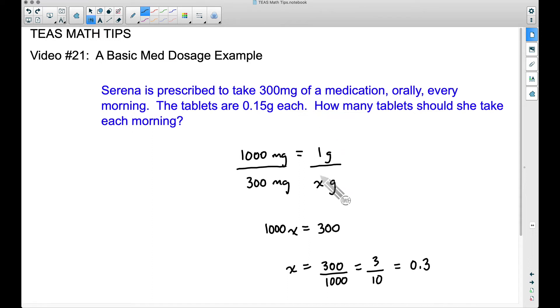So now let's go back and talk about what we've actually done here. We know she needs 300 milligrams of medication, but the pills, the tablets, come in grams. So we've used a conversion factor. 1,000 milligrams equals 1 gram. And when we solve this equation, when we solve this proportion, 300 milligrams is the same thing as 0.3 grams. Exact same thing. That's what we got down here.